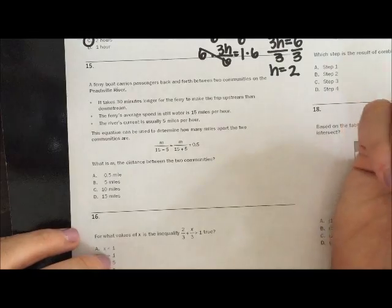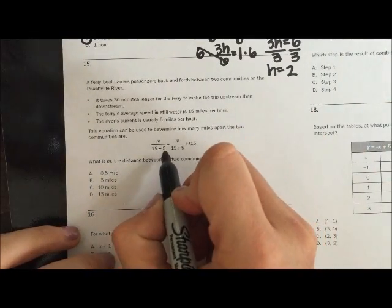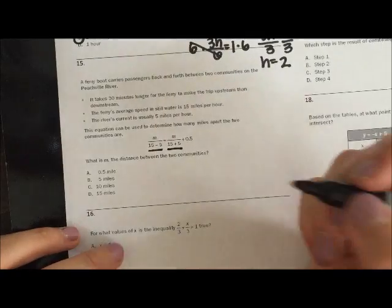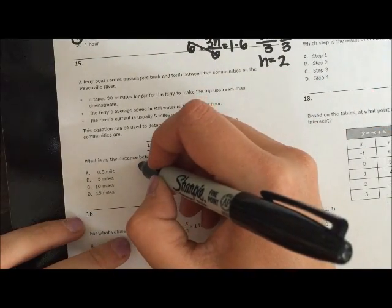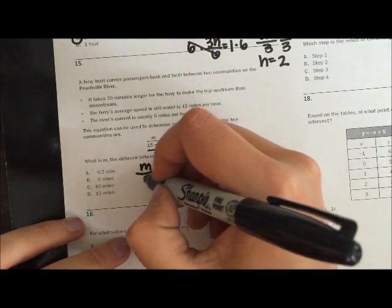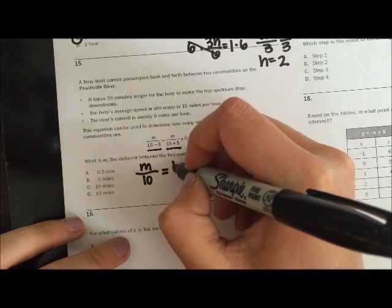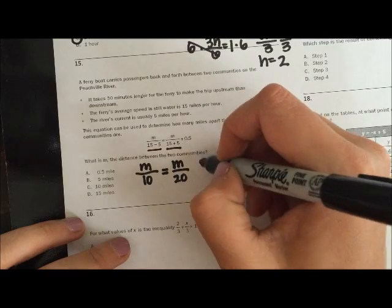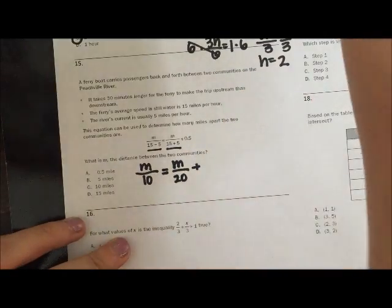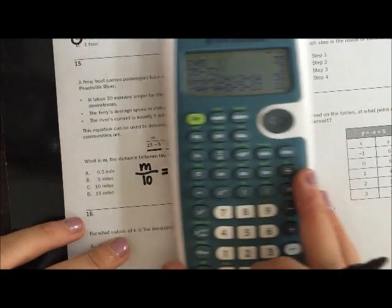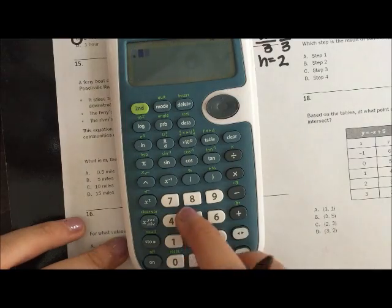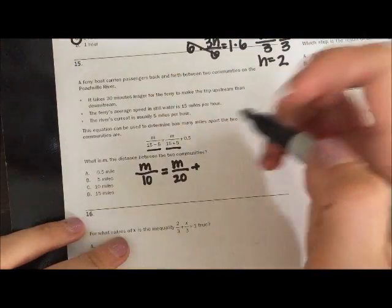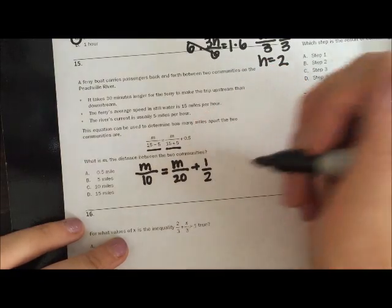Well, yeah, there is. This is just math, right? 15 minus 5 and 15 plus 5. So let's go ahead and simplify those. So 15 minus 5 is 10. 15 plus 5 is 20. And then 0.5, right? If I wanted to convert that to a fraction, well, we can use our calculators 0.5 and then push that arrow button, and it tells me it's 1 half.